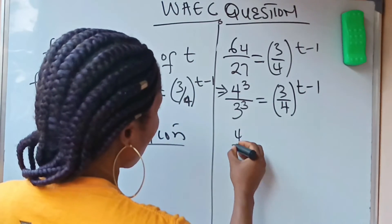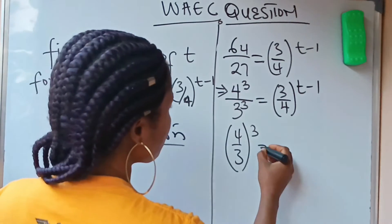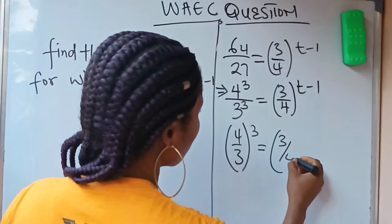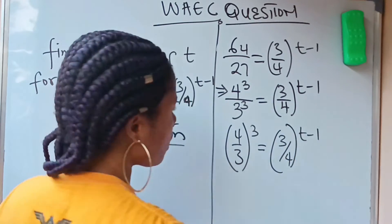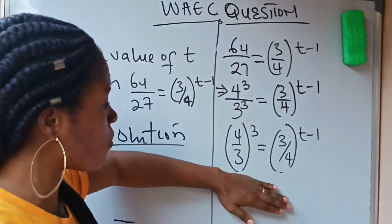When I look at this, we can now write that 4 over 3 raised to the power of 3, because this is 3 and this is 3, is equal to 3 over 4 raised to the power of t minus 1.